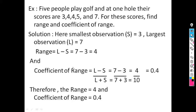For example, five people play golf on a four-person course with one hole, and their scores are 3, 4, 4, 5, and 7. For these scores, find the range and the coefficient of range.